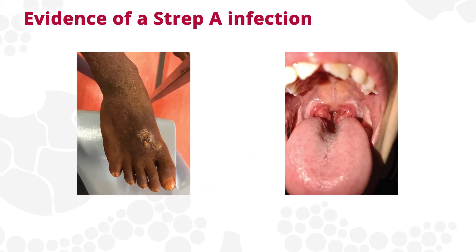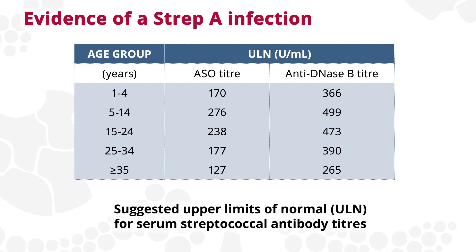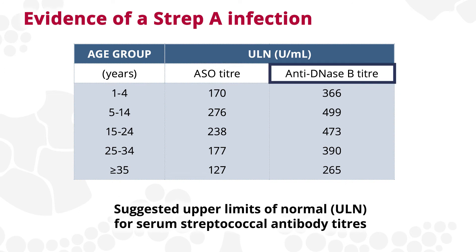Evidence of a recent Strep A infection is required to confirm a diagnosis of ARF. Blood serum can show two different antibodies: ASO (anti-streptolysin O) and anti-DNase B. These serum levels rise and fall at different rates, so more than one test may be required.